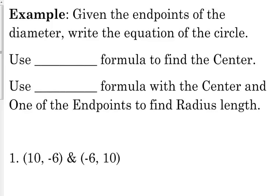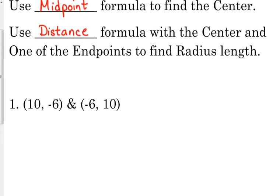Our first step is we're going to use the midpoint formula to find the center of the circle. Then once we have the center, we're going to use the distance formula with the center and one of the endpoints. I suggest we use the center and one of the endpoints because that way that will give us the radius. If we do the distance formula with the two endpoints, that's giving us the diameter and we're going to have to divide by 2. It's easier if we use the center and one of the endpoints.